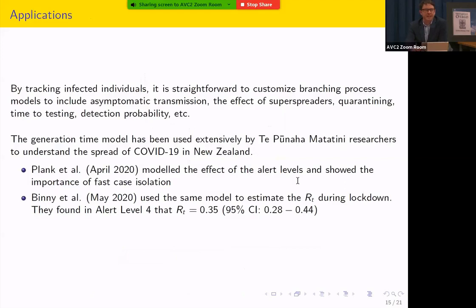So these have been applied quite extensively. They can also be very easily, you know, extended, customized, similar to compartmental models, but in very useful kind of ways. So for example, you can include detection probability. What happens if someone gets sick, but doesn't get tested? Or the test itself doesn't report them as being positive. So it's very easy by tracking individuals through a branching process to include those kind of important effects. This generation time model has been used extensively by the researchers at Te Pūnaha Matatini. And we released a number of papers related to just the spread of COVID-19 in New Zealand. So Plank et al. in April talked about modeling the effect of the alert levels and showing the importance of fast case isolation. And Binny et al. recently talked about and estimated the effective reproduction number during lockdown. And they found, for example, that Re is about 0.35 at alert level 4.